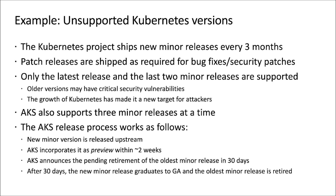In AKS, we try to stay up to speed with the upstream project as much as possible. We've mapped our support matrix to that upstream process, so we also support three minor releases at any given time. When a new minor version is released upstream, it's typically incorporated into AKS within a matter of weeks as a preview, and at that point we announce the pending retirement of the oldest minor release after 30 days.